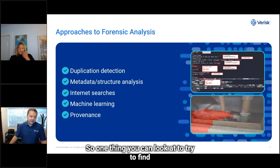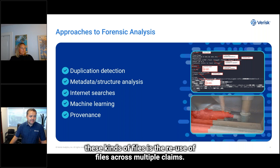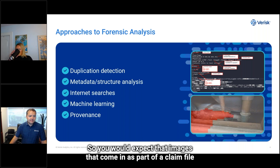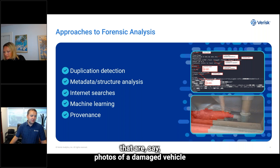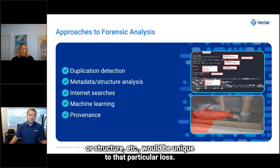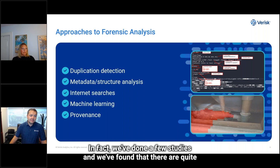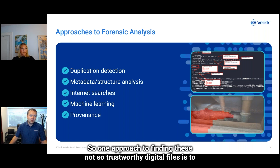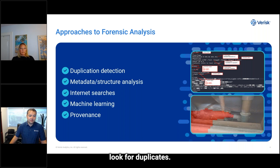One thing you can look at to try to find these kinds of files is the reuse of files across multiple claims — we call that duplication detection. You would expect that images that come in as part of a claim file, say photos of a damaged vehicle or structure, would be unique to that particular loss. We've done a few studies and found that quite a good number of these kinds of files get reused across many different types of insurance claims. So one approach to finding these not-so-trustworthy digital files is to look for duplicates.